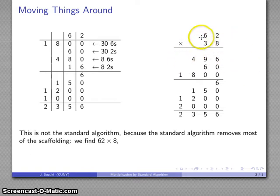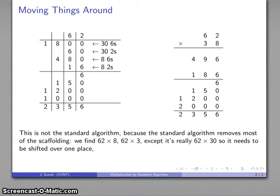And then we go 3 times 62. That is going to be 186. Oh, wait. We have to slide that over one place because it's really 62 times 30. It's 1,860. And then we add the partial products together. So we add 496, 186, and we get our answer, 2,356.